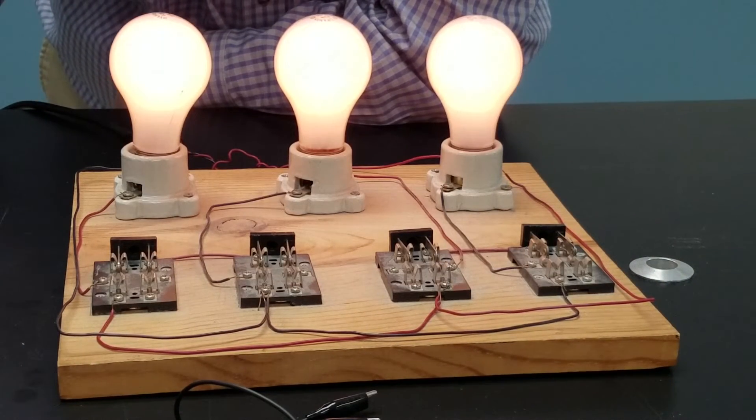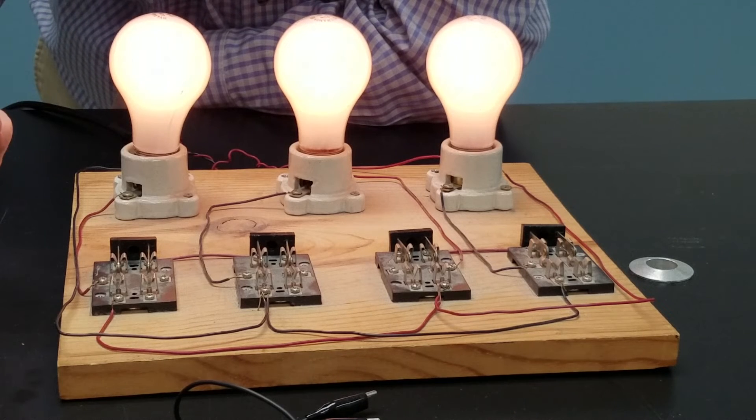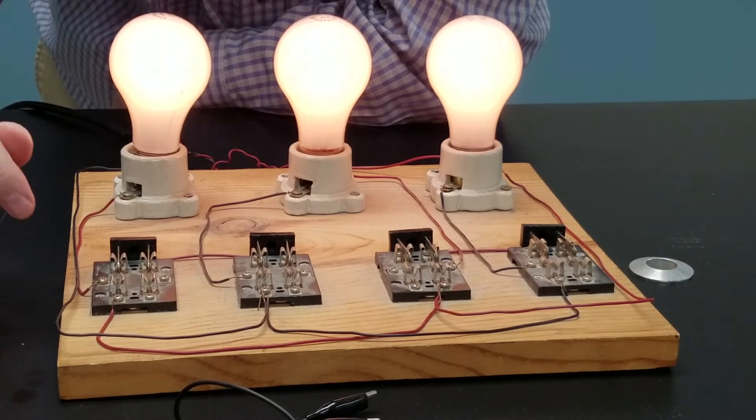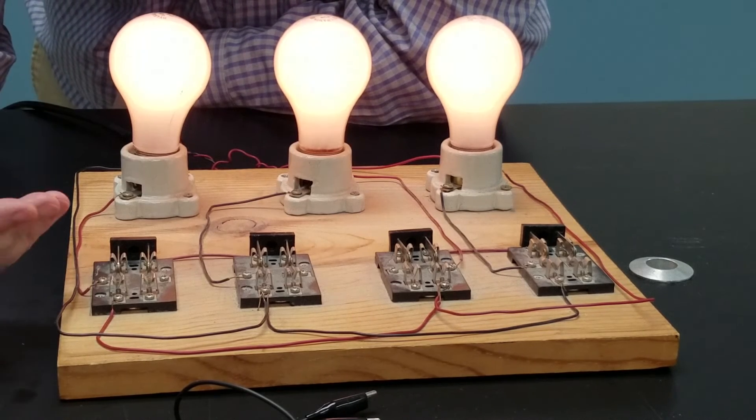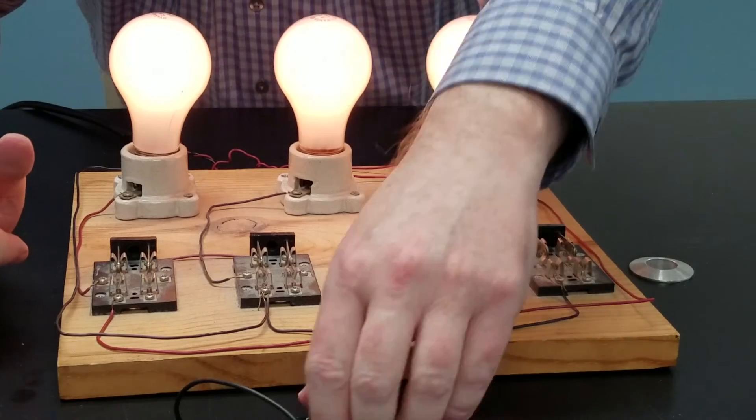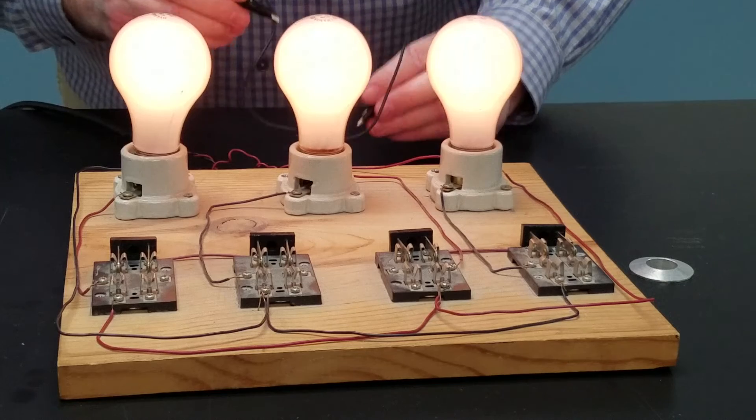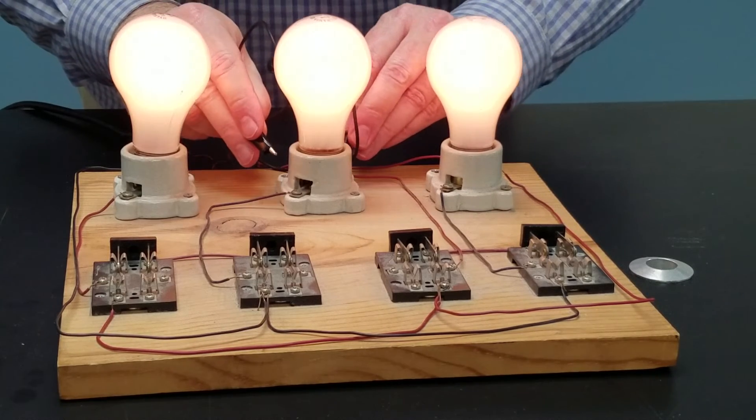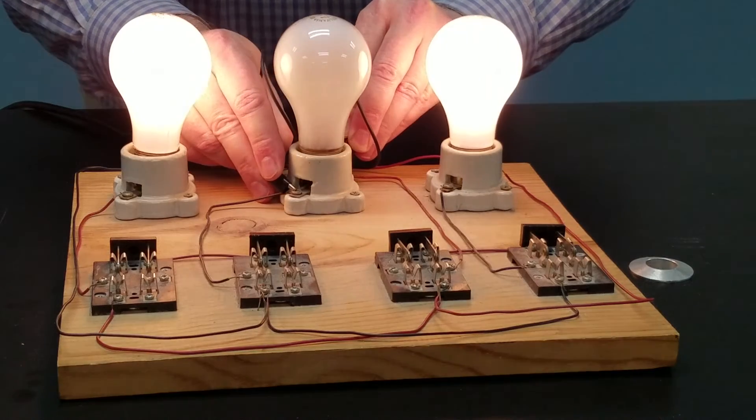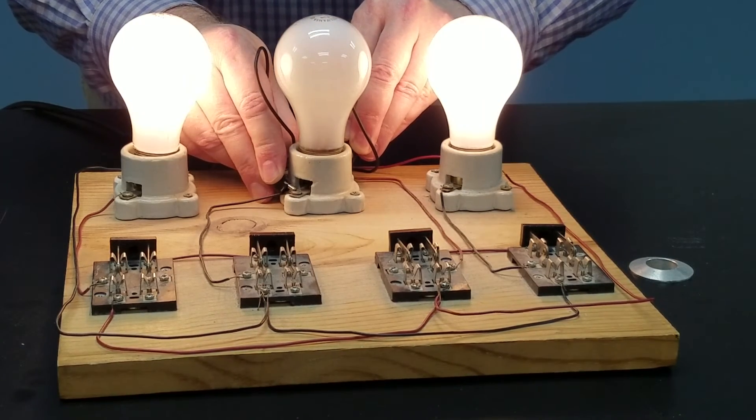If you have the Hewitt papers where he has some of his problems, he's got one where he basically has three light bulbs in series. And asks questions about their brightness and how much energy they give off. And then he has a jumper go across one. So, in the video that I have connected to this, I actually do this where I have the three light bulbs in series and I jump across the middle one.